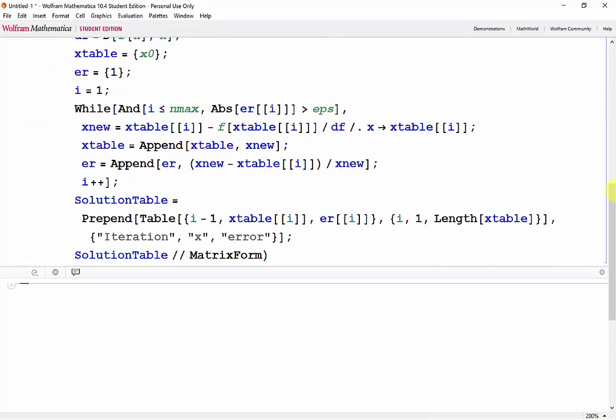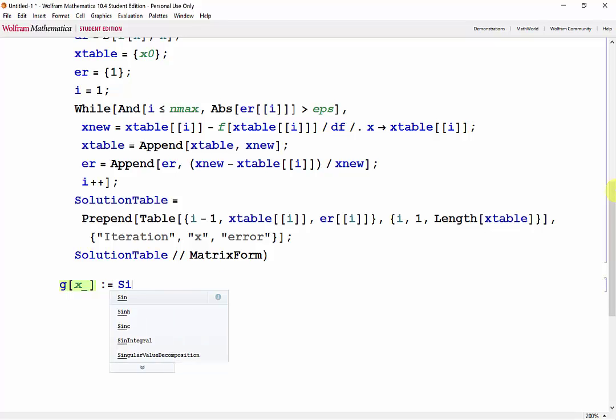And now let's test it. We'll use the same example we used in the last tutorial. So the sine of 5x plus the cos of 2x. Now newt, and we need our function, our initial guess, we'll start with 0, maximum number of iterations, and our stopping error. Shift enter.